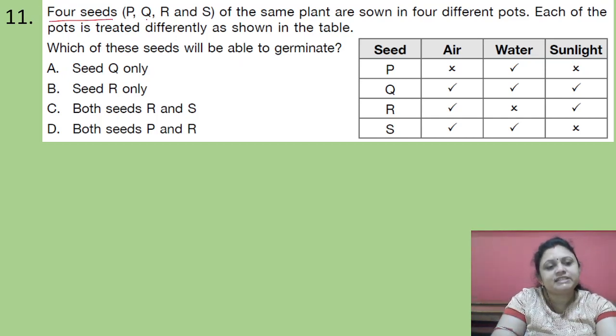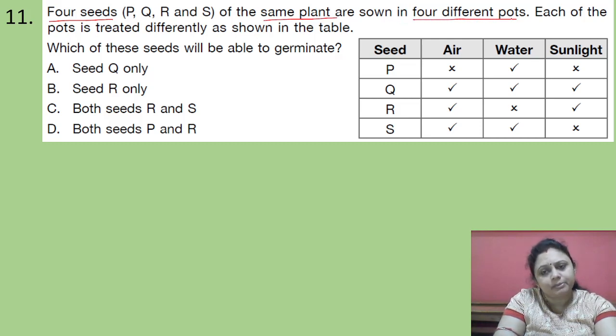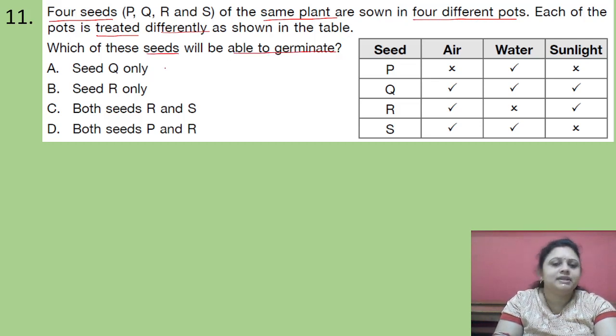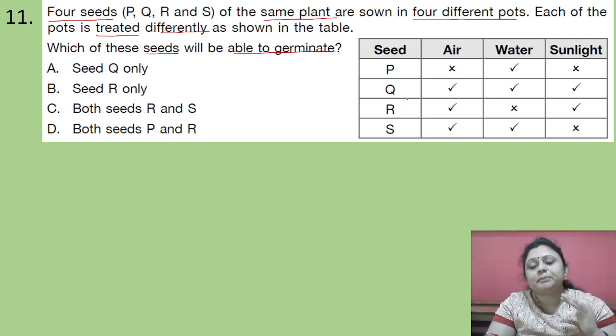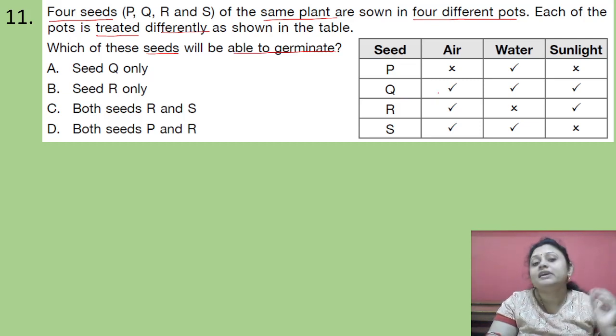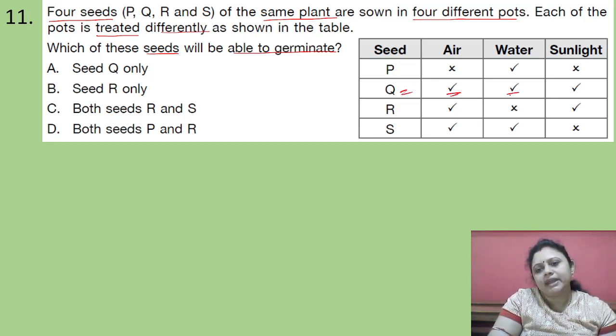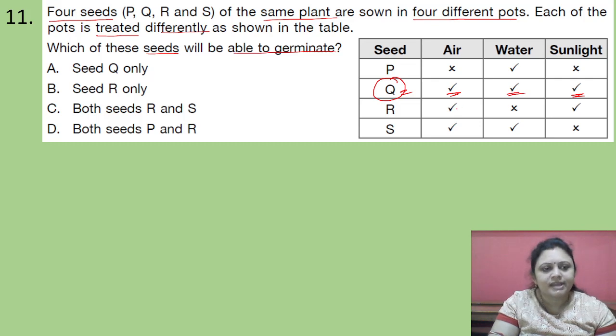Coming to the next question. Four seeds P, Q, R and S of the same plant are shown in 4 different pots. Each of the pots is treated differently as shown in the table. So which of these seeds will be able to germinate? Options are A. Seed Q only. B. Seed R only. C. Both seeds R and S. D. Both seeds Q and R. So here first thing is if a seed is getting proper amount of air, water and sunlight, sufficient amount of air, water and sunlight, then only it will be able to germinate. Otherwise it will not. So here we can see Q is getting proper air, water and sunlight. So Q will be able to germinate. Not the other seeds. So correct answer is option A. Seed Q only.